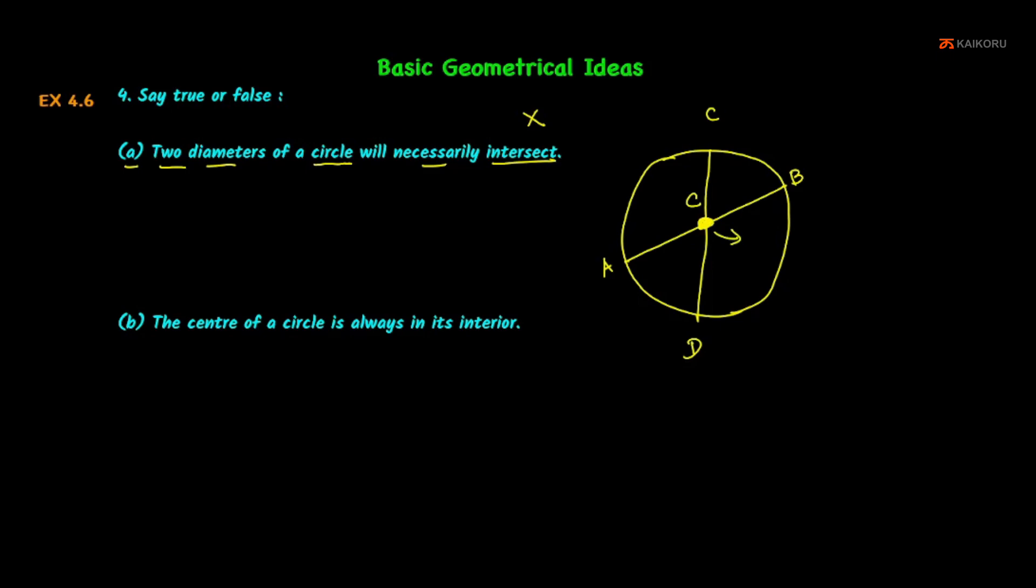This is the two diameter intersecting point. One circle, the diameters of the circle intersect at this point. So this is the answer: True.